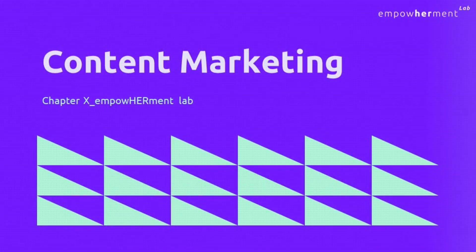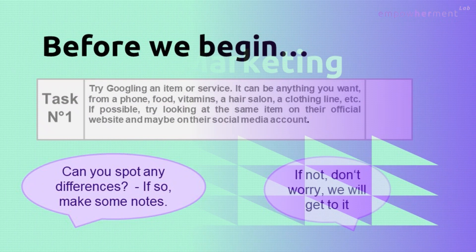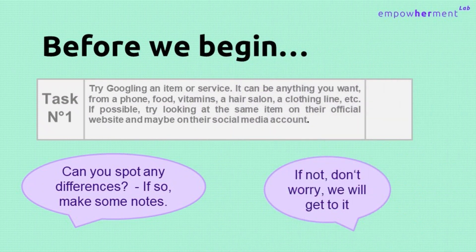Before we even start explaining what content marketing is, please do the following exercise. Pause the video so that you can have enough time to do it. Try googling an item or a service — it can be anything you want, from a phone, food, vitamins, a hair salon, a clothing line, etc. If possible, try looking at the same item on their official website and maybe on their social media account. Can you spot any differences? If so, make some notes. This chapter should teach you about content marketing and how to tell it apart from other types of marketing.